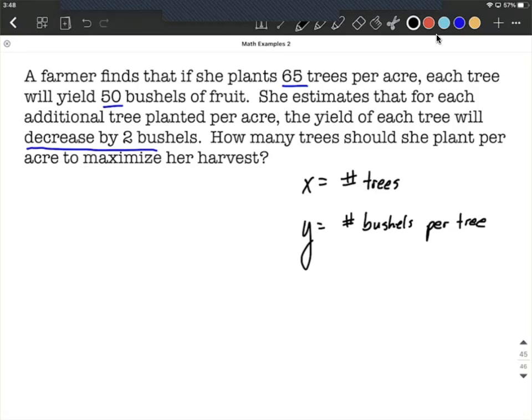Basically, you could set this up as two ordered pairs if you'd like. You could say, well, 65 trees per acre goes along with 50 bushels. But if I planted one extra tree, 66 trees, then we decrease by two bushels. We get 48 bushels per tree. This is going to be a linear relationship, that for each additional tree, you're going to decrease by two bushels per tree.